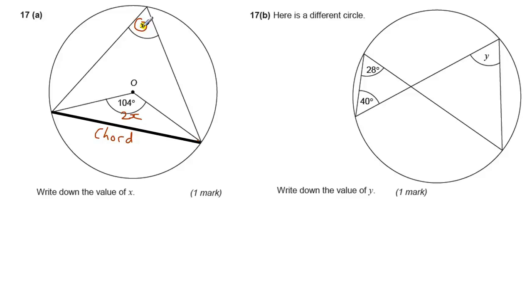So we need to find x, so that's 2x, so we need to divide 104 by 2 which is 52 degrees. And that's why it says write down the value of x because it's that straightforward. If you know the rule you can do it.